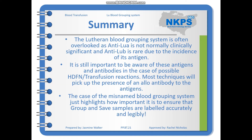The Lutheran blood grouping system is often overlooked. Anti-LUA is not normally clinically significant, and anti-LUB is rare due to the high incidence of its antigen, but it's still important to be aware of these antigens and antibodies in the context of possible HDFN or transfusion reactions. Most techniques will pick up the presence of an alloantibody to these antigens. The misnamed blood grouping system highlights how important it is to ensure that samples are labelled accurately and legibly.